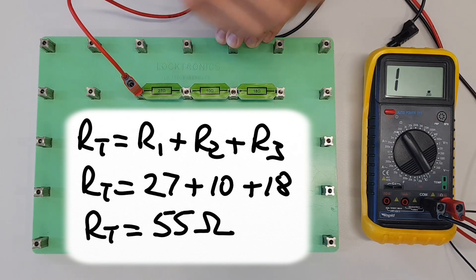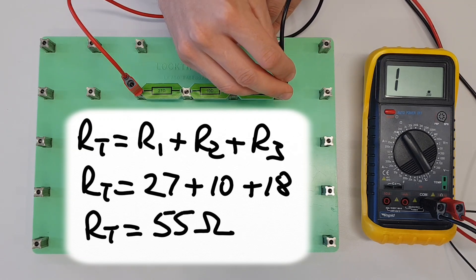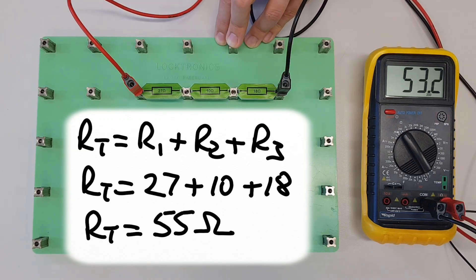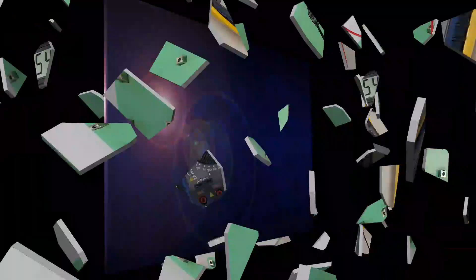Let's measure the resistance from one side of the circuit to the other. We're coming out at 54.1, 54.2—it's settled down there. So we can see there again we're very close to that 55 ohms that we should expect to be getting, and we're quite happy with that result. So that's what happens when you connect resistors of different values in series with each other.